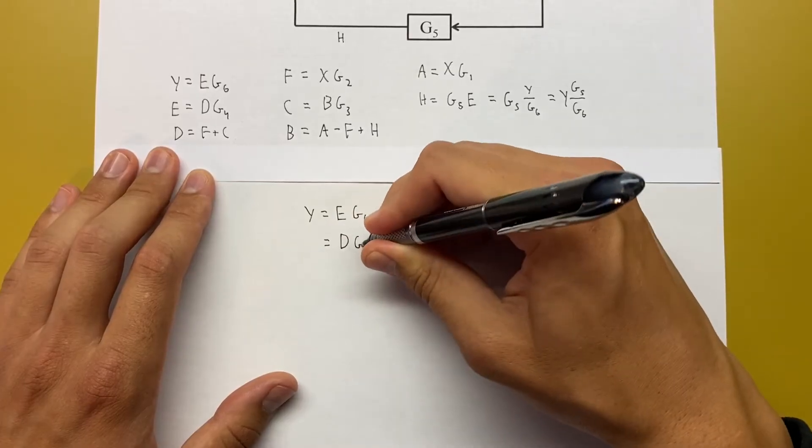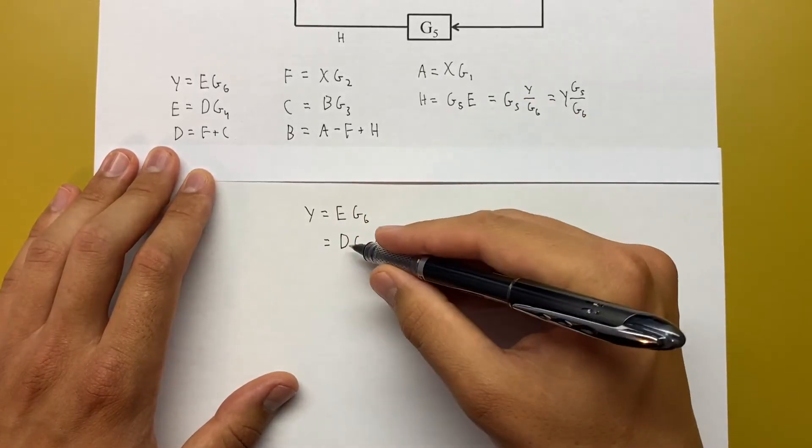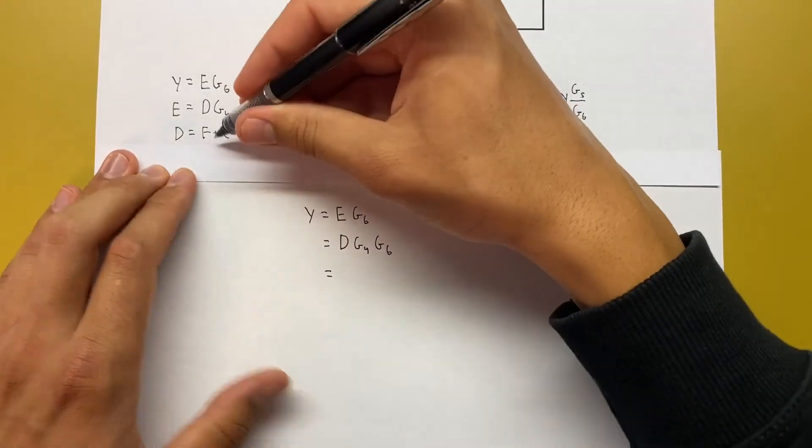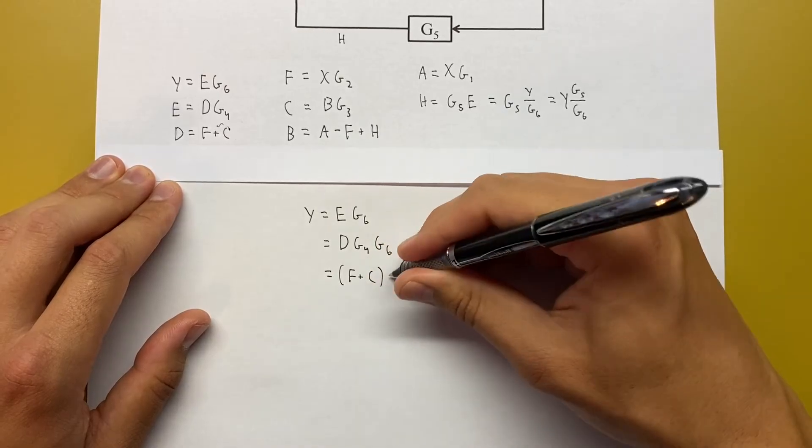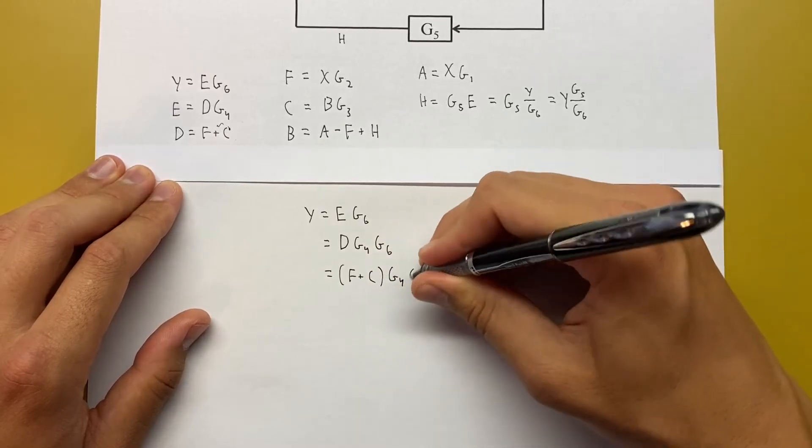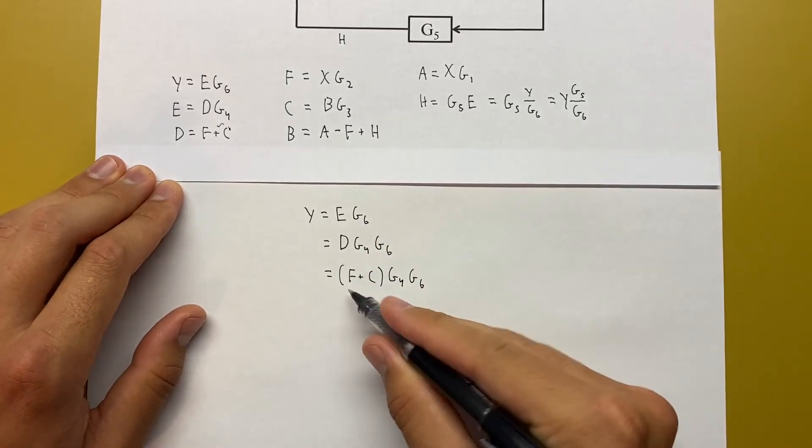So D G4 G6. I've got to replace that D. D is equal to F plus C. And we'll leave that G4 G6.